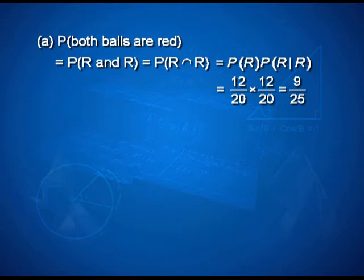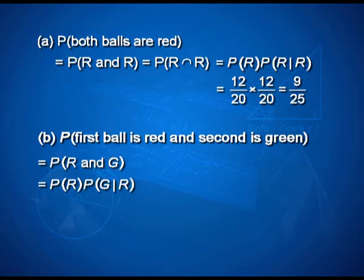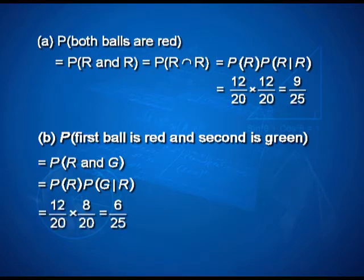For the case where the first ball is red and the second is green, the probability of R and G equals the probability of R multiplied by the probability of G given that R has happened, which is 12 by 20 into 8 by 20. The total possible outcomes are 20 and 8 are favorable for green, simplifying to 6 by 25.